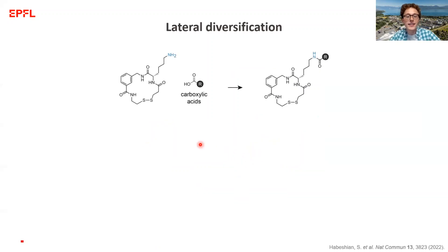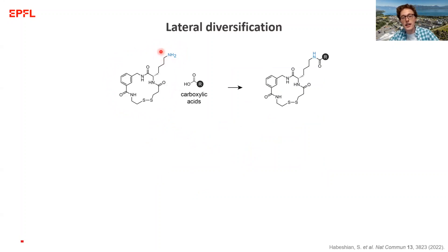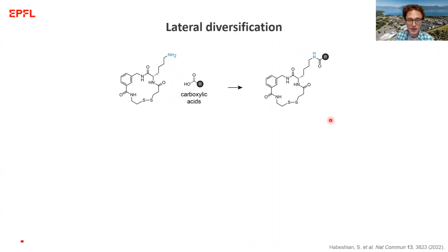Specifically, we did an amide coupling. This is what the disulfide macrocycle scaffold looks like that we get off the resin. The key here is it has a free exocyclic amine. We react this with carboxylic acids to form these acylated macrocycle scaffolds. We're doing amide couplings, which is the same chemistry we actually do on resin to make our peptide.